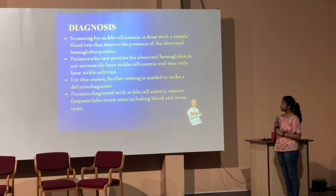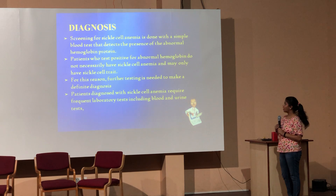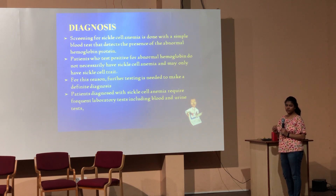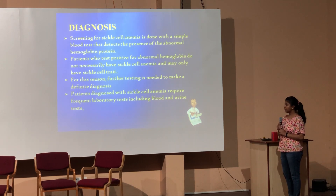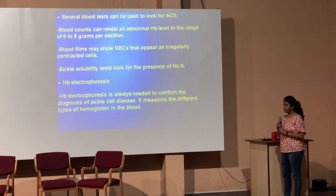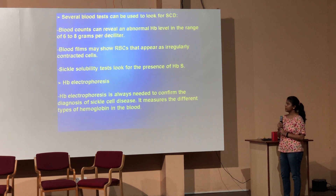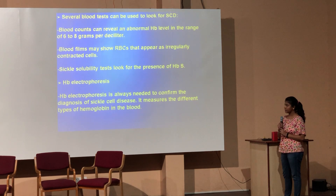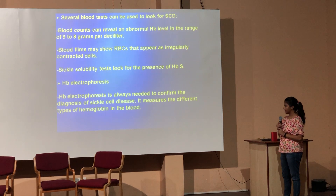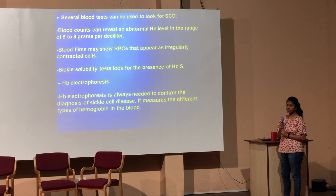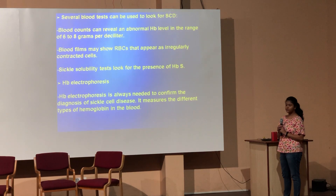In diagnosis of the disease, screening is done with a simple blood test that detects the presence of the abnormal hemoglobin protein. Patients who test positive do not necessarily have the disease — they may have the sickle cell trait. Further testing is required to make a definitive diagnosis. Blood tests can reveal an abnormal hemoglobin level in the range of 6 to 8 grams per deciliter. Blood films may show RBCs appearing as irregularly contracted cells. Sickle solubility tests look for the presence of HbS. Hemoglobin electrophoresis is always needed to confirm the diagnosis and measures the different types of hemoglobin in the body.